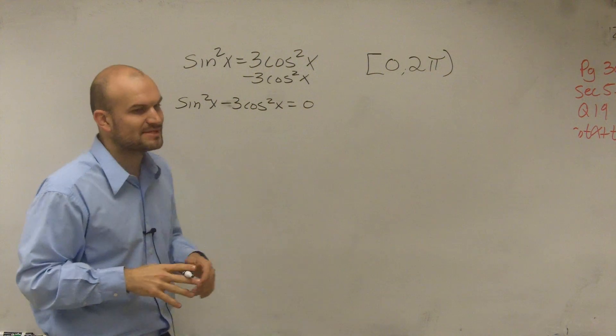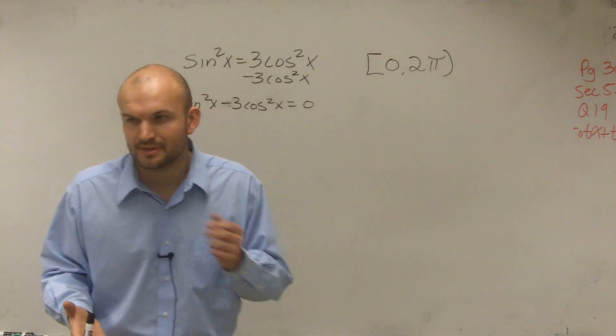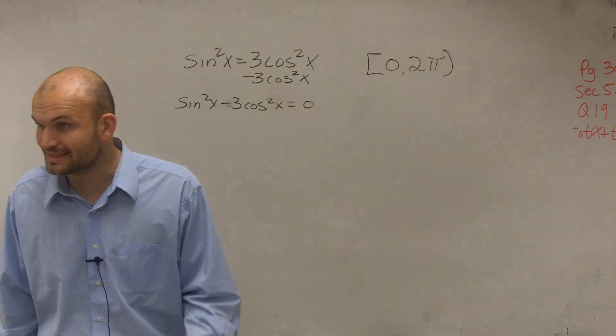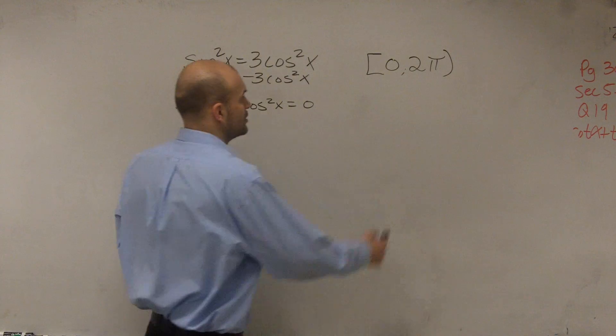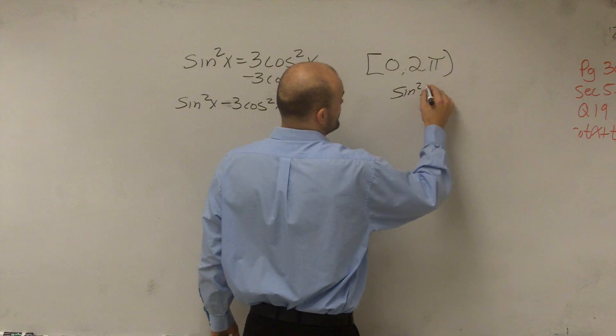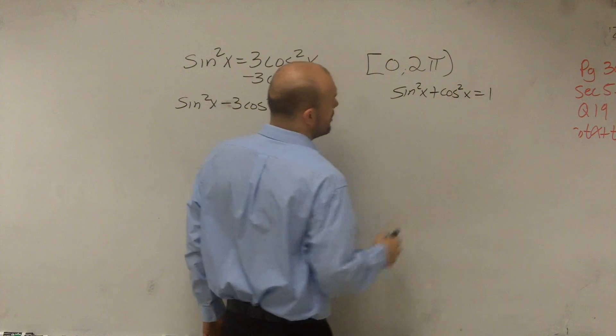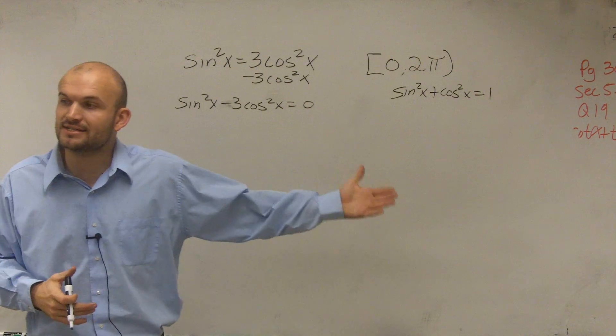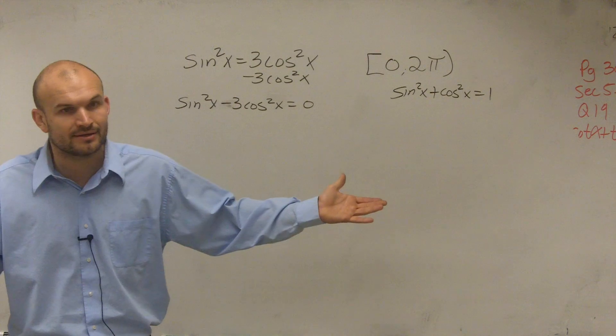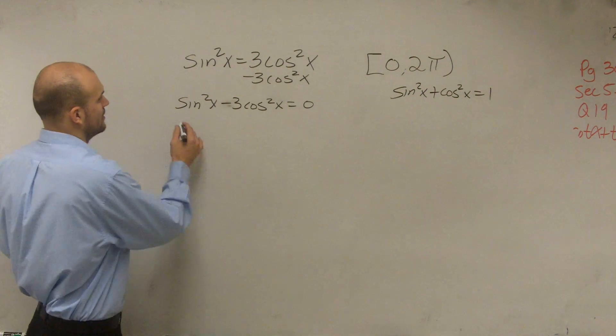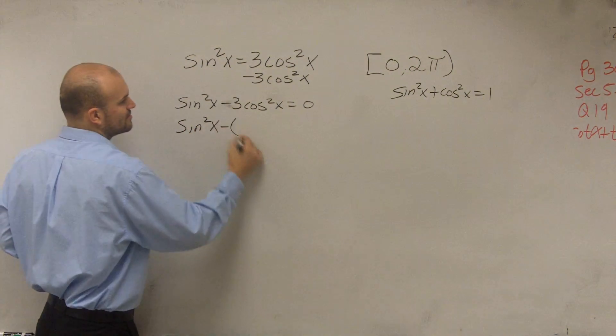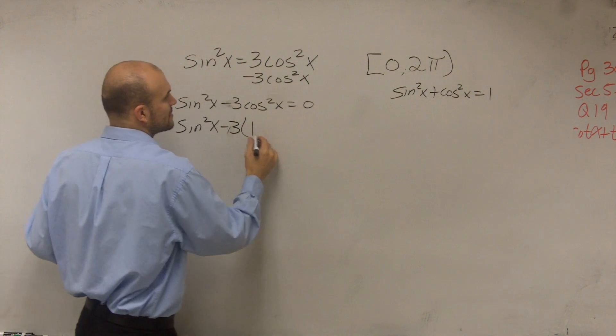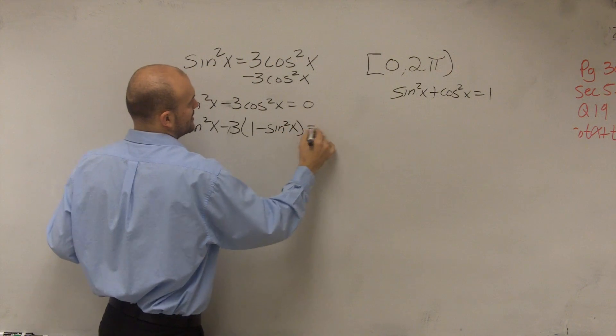So I'm going to put these on the same side because somehow I need to combine them. Now, we have a problem is we can't combine them because they're not the same function. However, by using my Pythagorean identities, sine squared of x plus cosine squared of x equals 1, I can now transform cosine into sine. So this would be negative 3 times 1 minus sine squared of x equals 0.